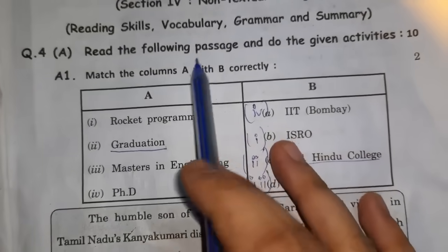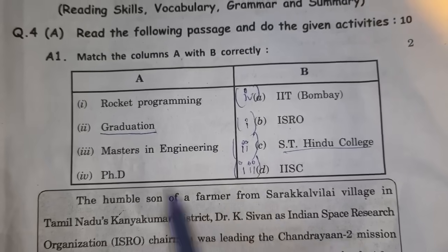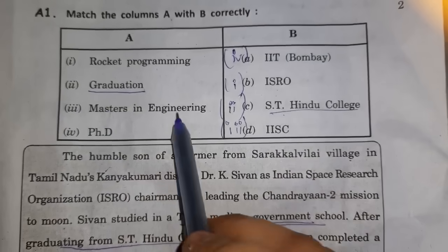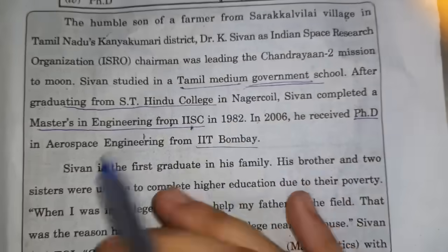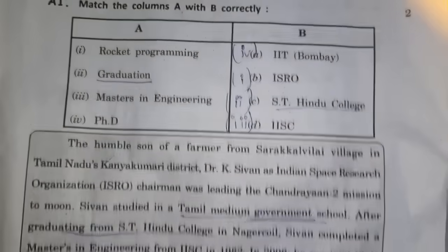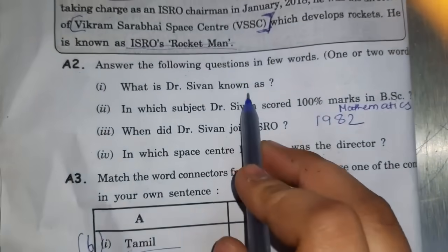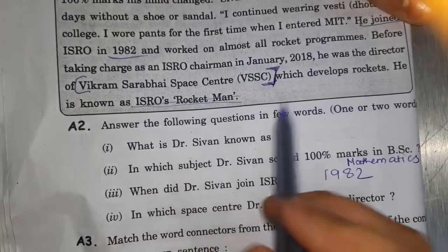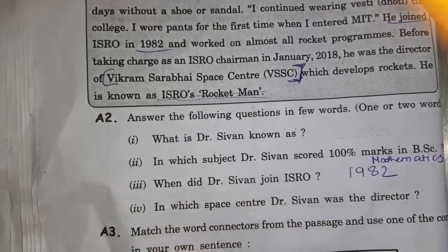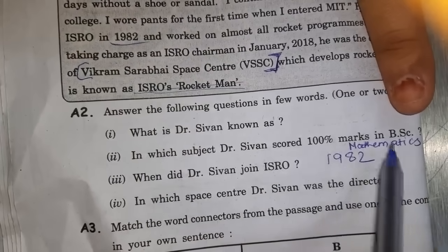Next: unseen passage — non-textual passage about rocket programming. Dr. Shivan: rocket programming, graduation completed at ST Hindu College, Masters in Engineering from IIT, PhD from IIT Bombay. What is Dr. Shivan known as? One or two words — he is known as 'Rocket Man'. In which subject did Dr. Shivan score 100%? In B.Sc. Mathematics.